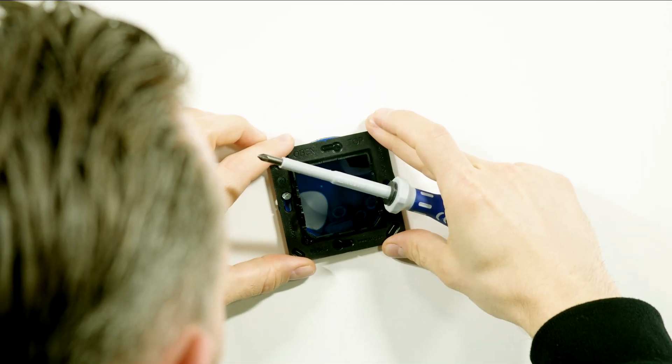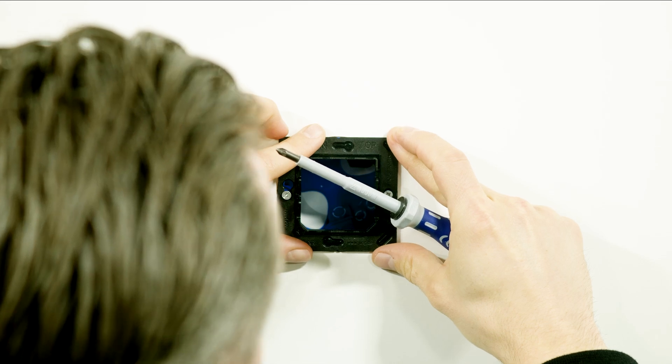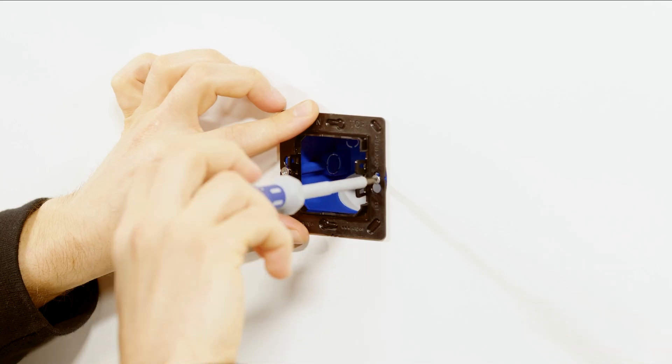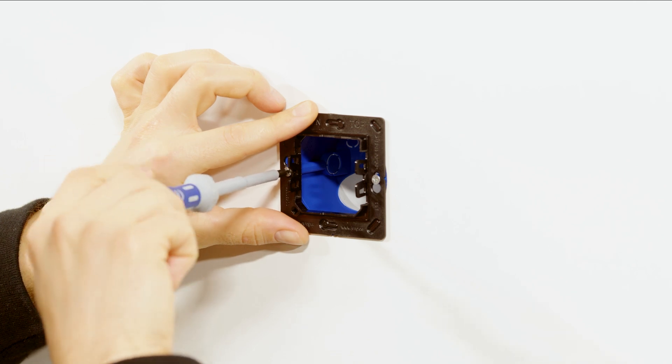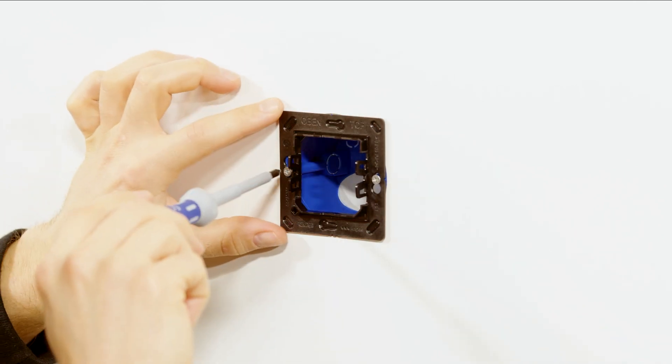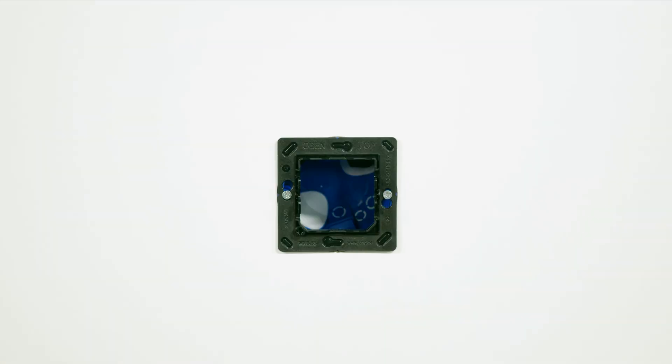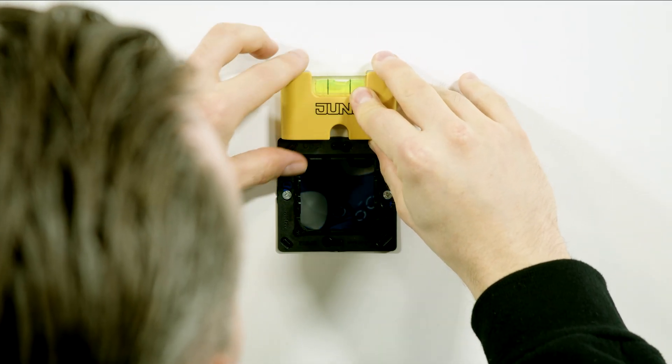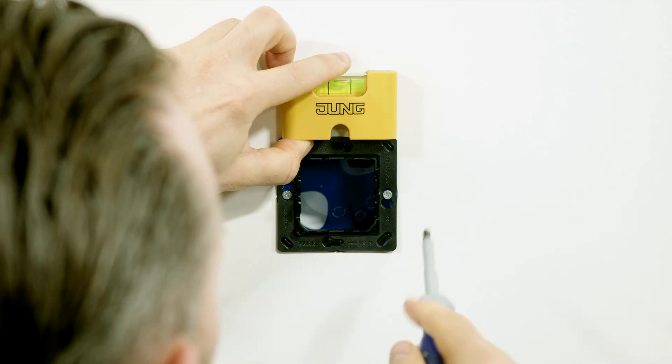Align the base plate with the corresponding marking facing upwards and fasten it to an appliance box. Use a spirit level to check whether the base plate is straight and correct any misalignments using the screws.